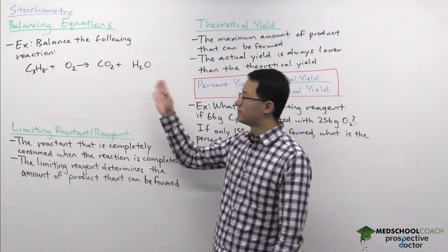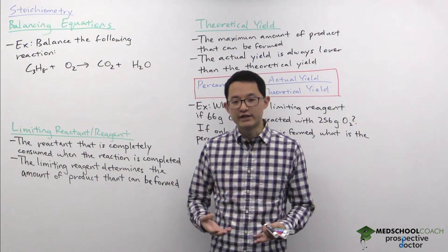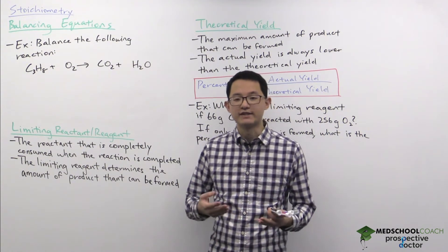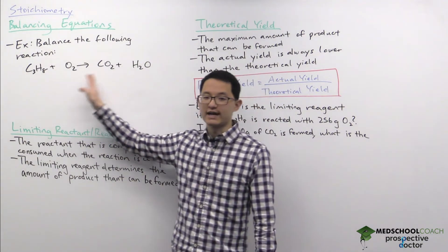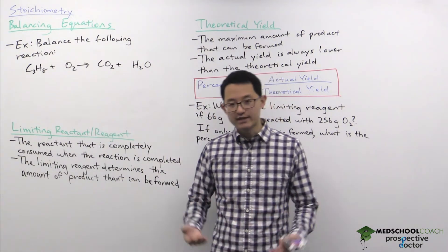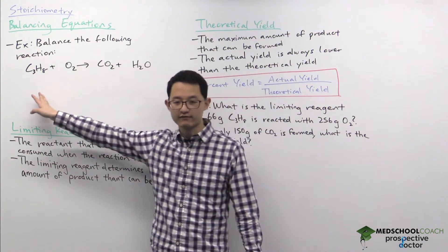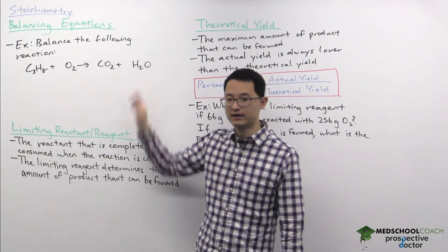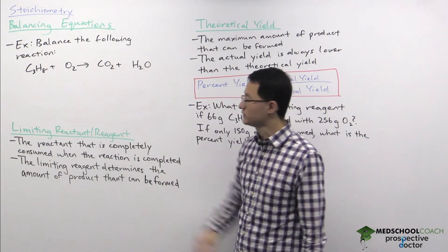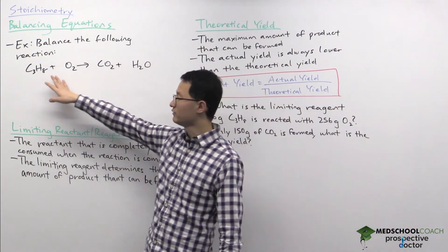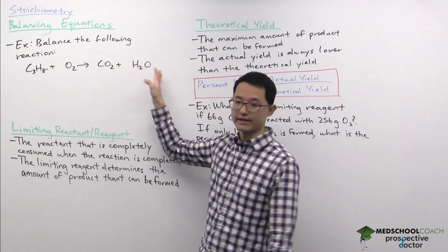So first, balancing equations. The goal of balancing equations is to make sure that you have the same number of atoms for each element on both sides of the reaction. That makes sense because of conservation of mass — whatever atoms you have on the left you have to have on the right as well. To look at how this works, let's take this example reaction where we have propane reacting with oxygen to form carbon dioxide and water.